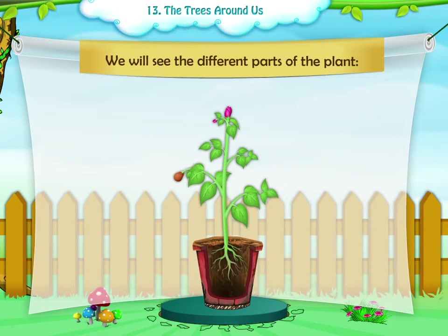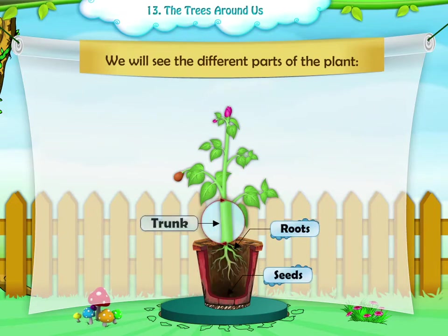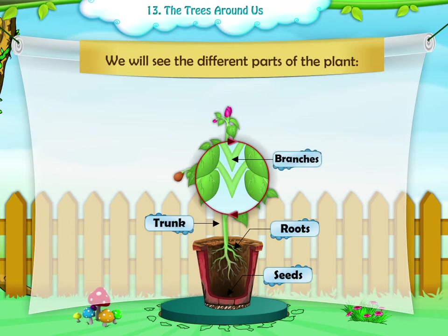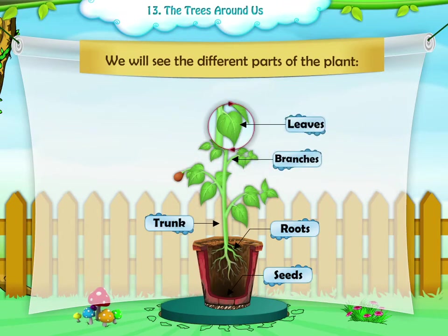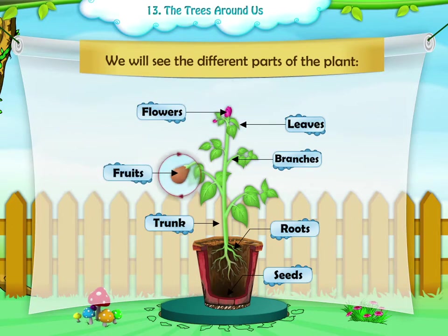Now we will see the different parts of the plant: the roots, seeds, trunk, branches, leaves, flowers, and fruits are the parts of a tree.